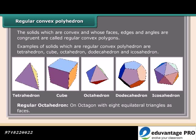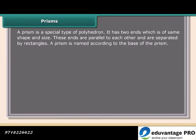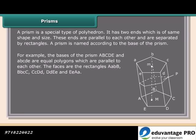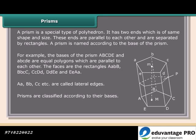A prism is a special type of polyhedron. It has two ends of the same shape and size that are parallel to each other and separated by rectangles. A prism is named according to its base. For example, the bases ABCDE are equal polygons parallel to each other, and the rectangular faces AABB, BBCC, CCDD, DDEE, and EEAA form the lateral sides. AA, BB, CC, etc. are called lateral edges. Prisms are classified according to their bases.